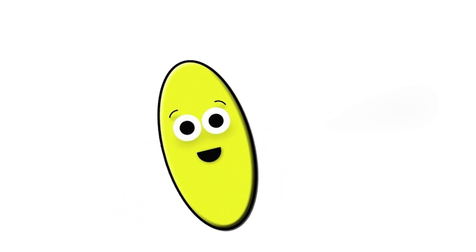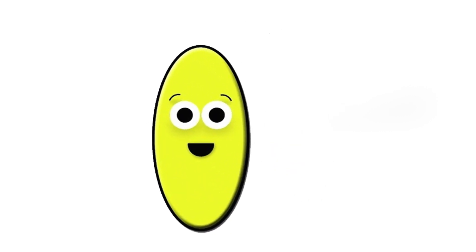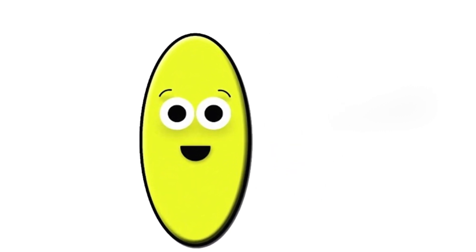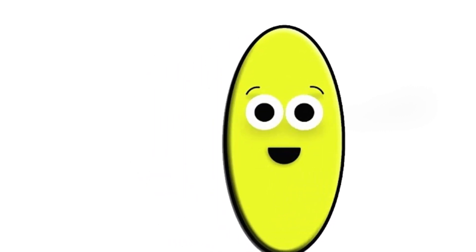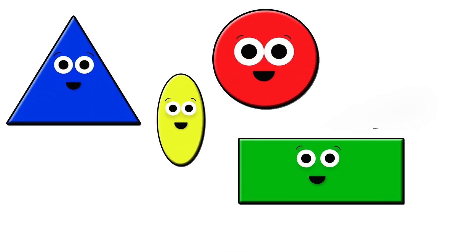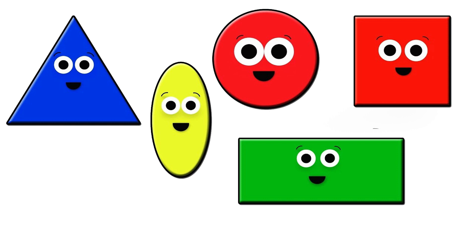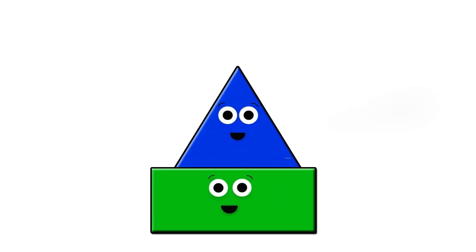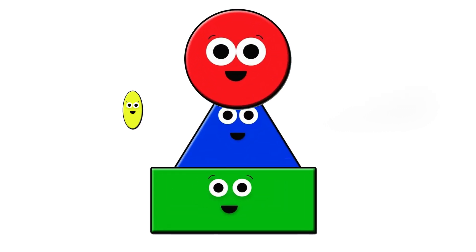I'm an oval, round and long, round and long. I'm an oval, round and long, like a circle that's very long indeed. Triangle, rectangle, circle, oval, square. Triangle, rectangle, circle, oval, square.